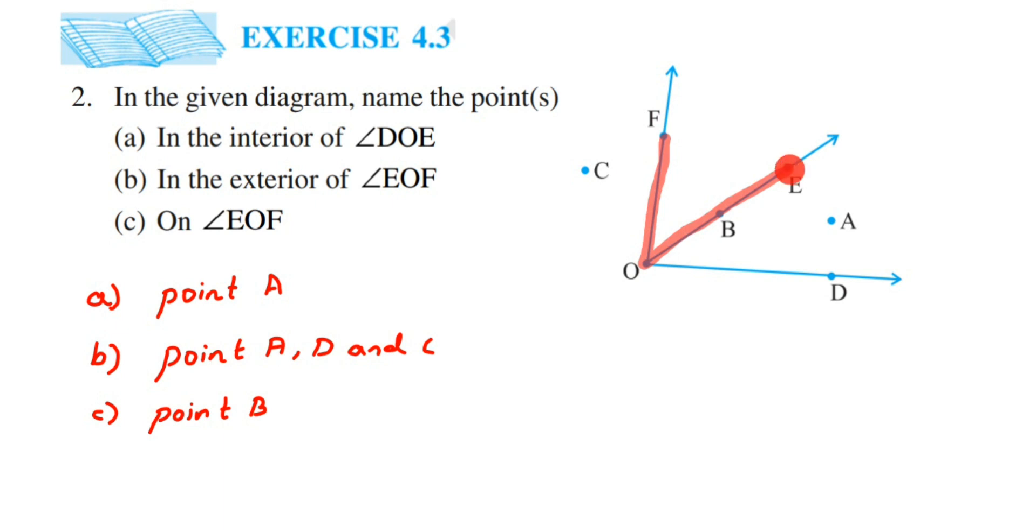E, O, and F, because these are also points on this angle. So B is there definitely. Apart from B, we're going to write down point E, point O, and point F. So the answer will be points B, O, E, and F.